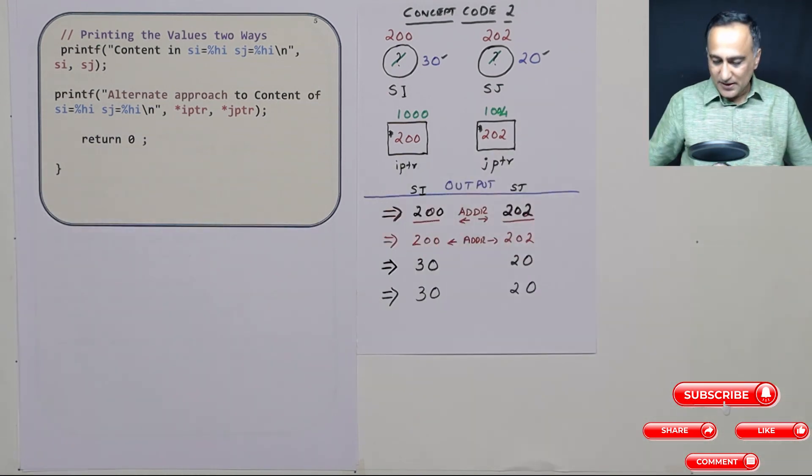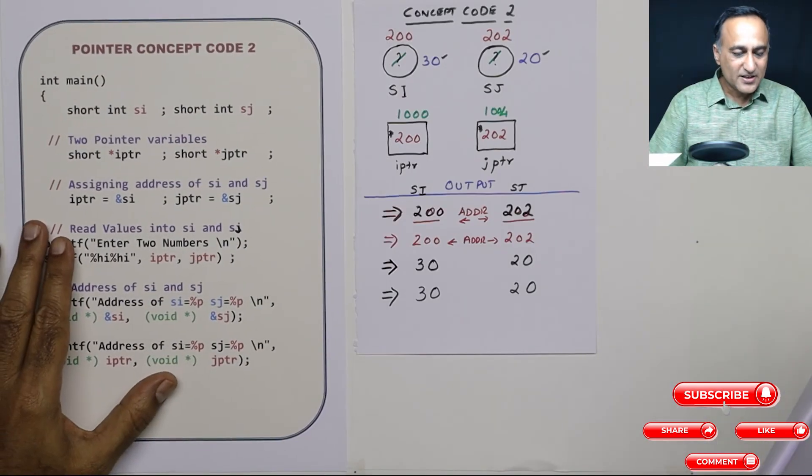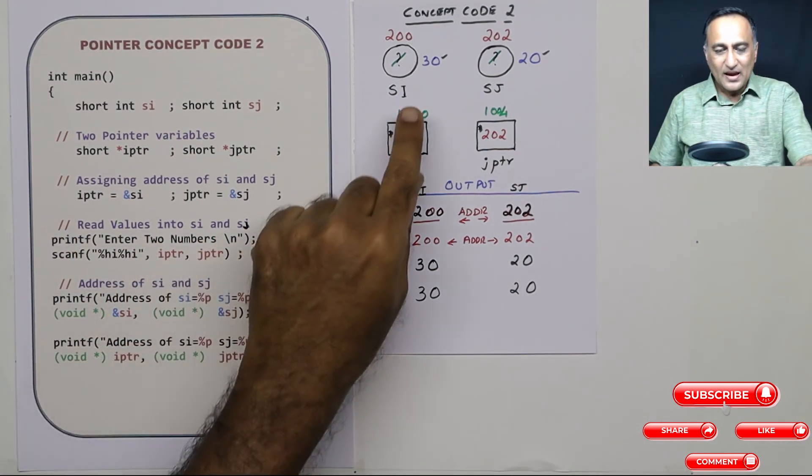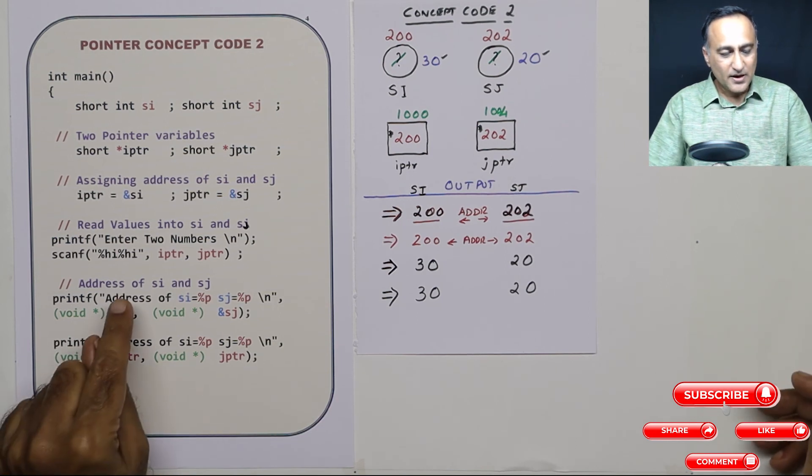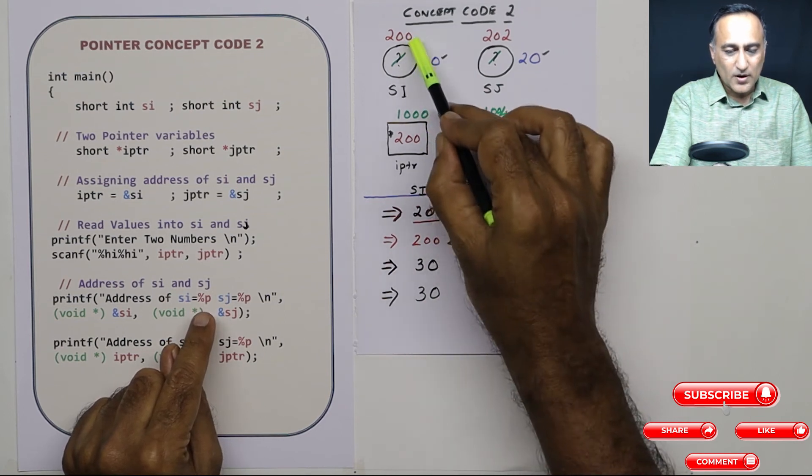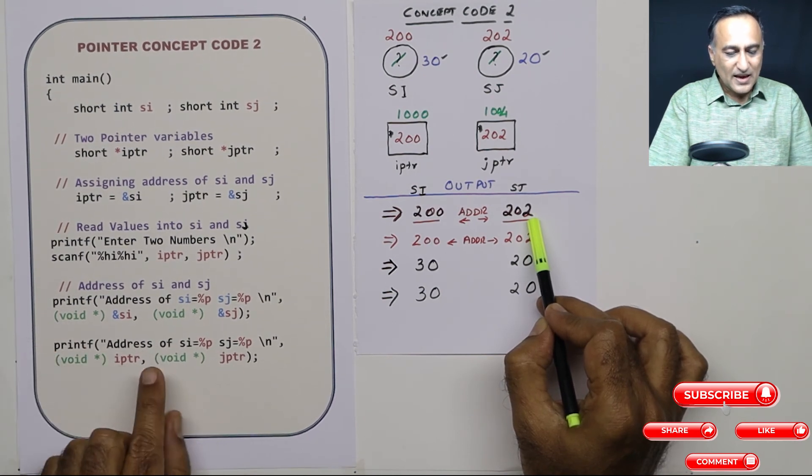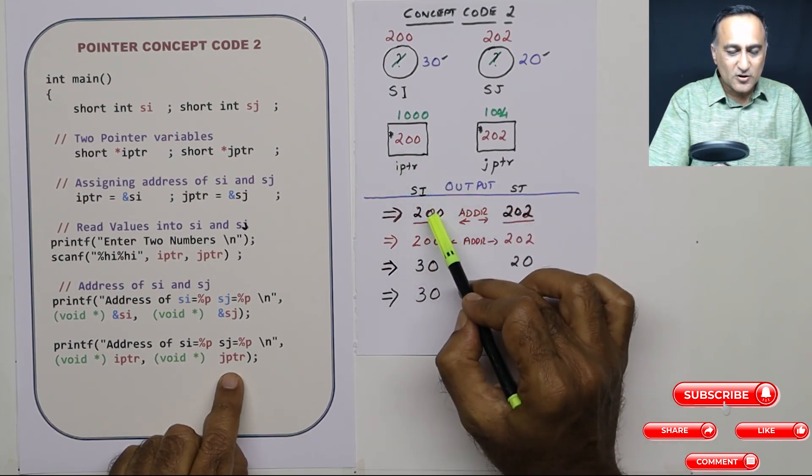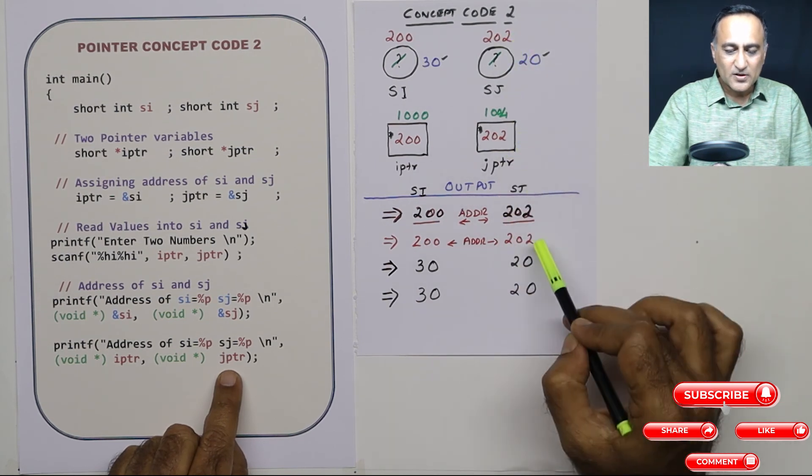Just to be sure that we have gone through the program in a very sensible and correct manner, let us try to re-verify. When I am reading values here, 30 is entered into SI and 20 is entered into SJ through IPTR and JPTR address of SI and SJ. Address of SI is 200, address of SJ is 202. Now what I am doing here is I am printing IPTR and JPTR. IPTR contains 200 which is the address of SI. JPTR contains 202 which is the address of SJ.